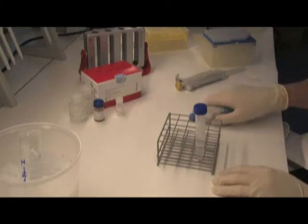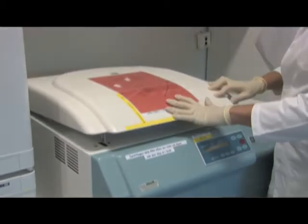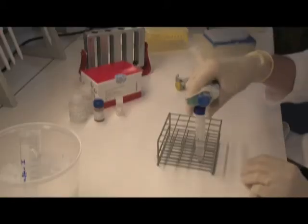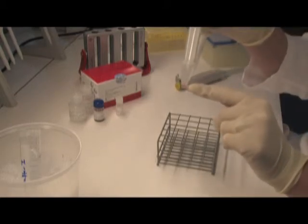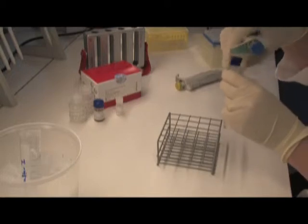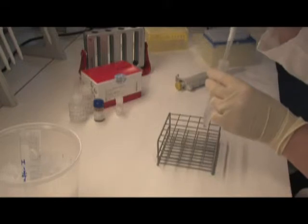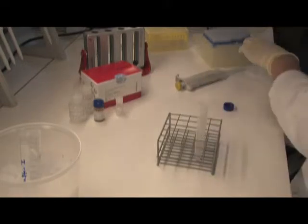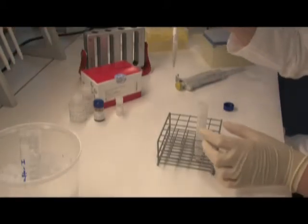Add 2 mls cold isolation buffer to wash cells followed by centrifugation for 8 minutes at 350 G. After centrifugation, you should see a nice pellet of cells. Remove and discard the supernatant. Add 1 milliliter cold isolation buffer to the cell pellet and gently re-suspend.